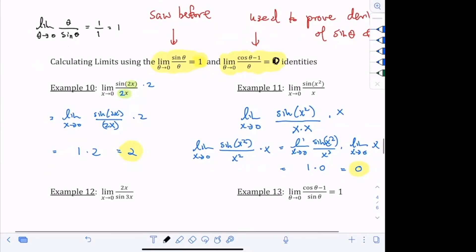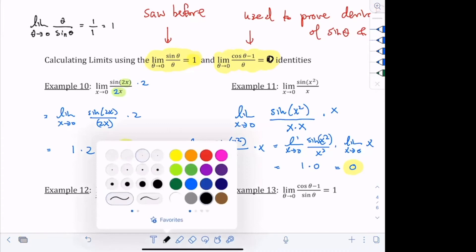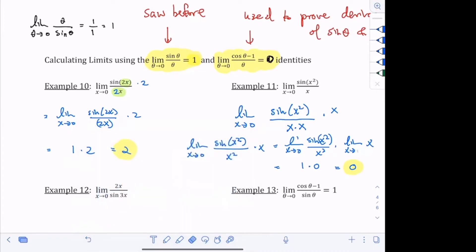I have a question for limit x goes to 0, x. We're just plugging in the 0, right? That's why it's 0. Correct. Definitely, yes.